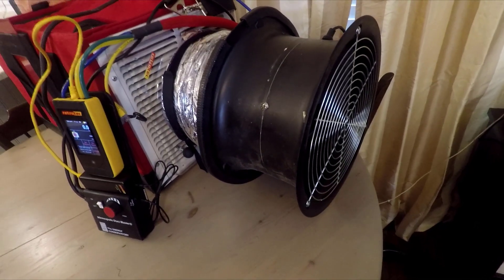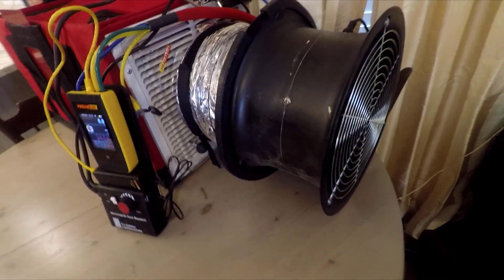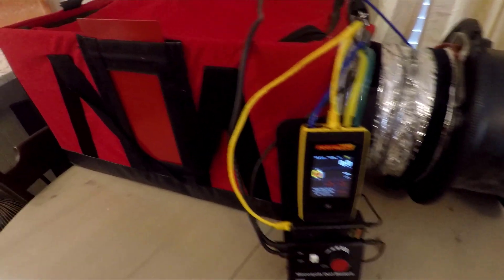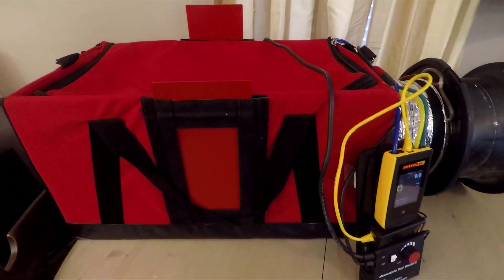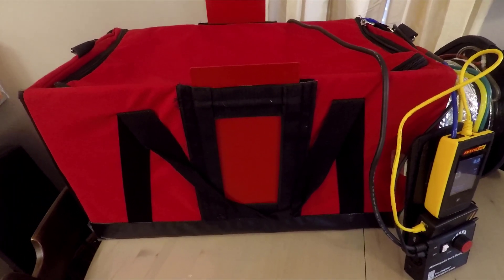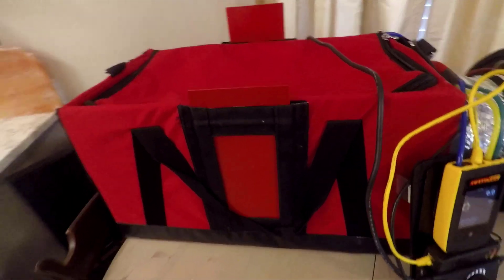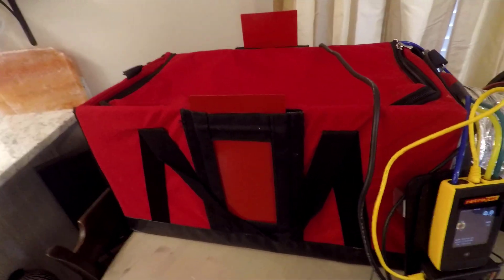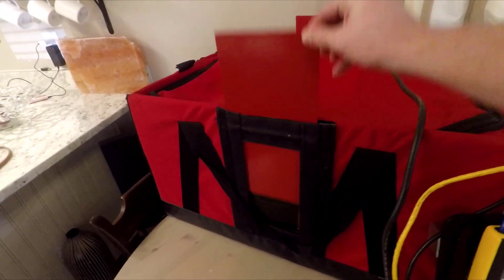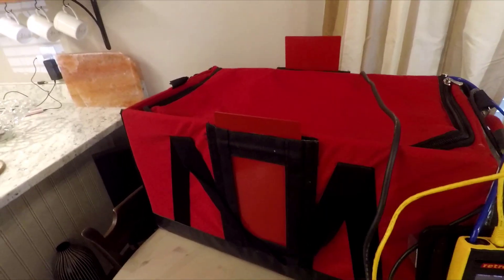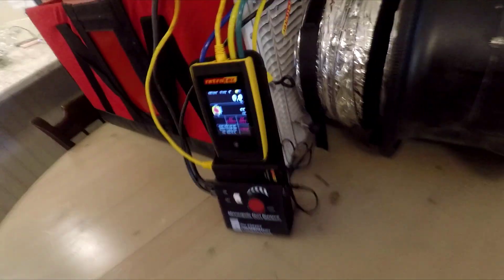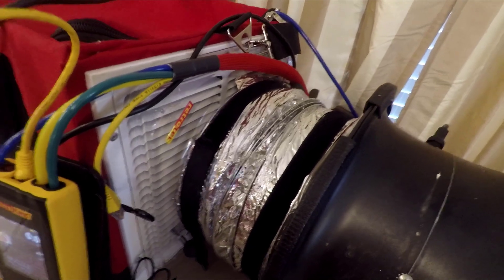To show you how we have things set up, we have our duct blaster fan hooked up to our Retrotech duct simulator. And what this is, it's basically the case that a Retrotech duct tester would come in, but it's been modified to work as a mini duct system. So it has these different ports on it that can slide to adjust air leakage and it also has this return grill here on the end that we're connected to.